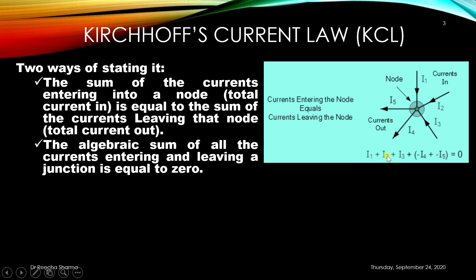As shown in the figure, this equation is written as I1 plus I2 plus I3 minus I4 minus I5 is equal to zero. The current entering the node is always considered as positive, and the current leaving the node is considered as negative. So I1, I2, I3 are the positive currents and I4 and I5 are the negative currents. The algebraic sum of all currents is equal to zero.